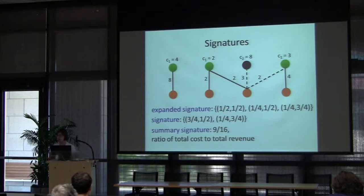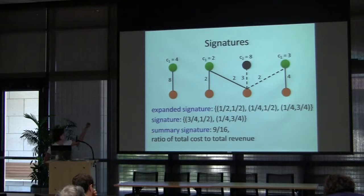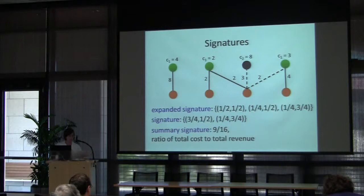The summary signature is just the ratio of total cost to total revenue. Here total cost is 4+2+3=9 and total revenue is 16, giving a summary signature of 9/16. This is in bijection with the notion defined in the KPR paper.